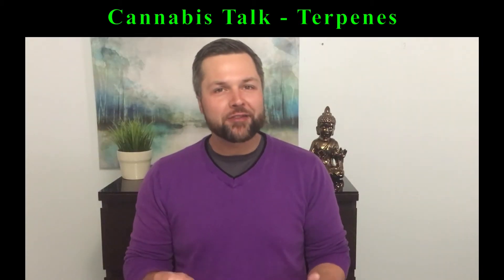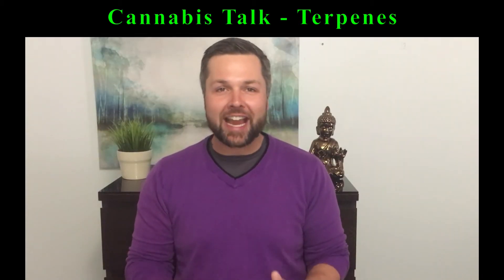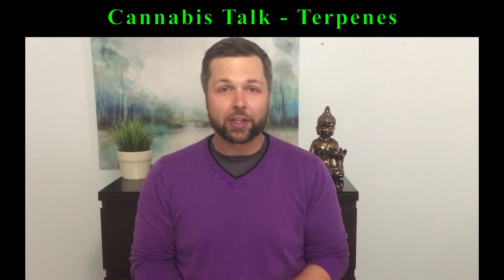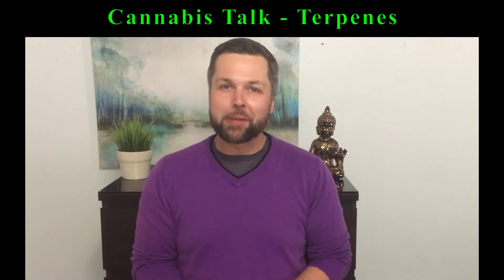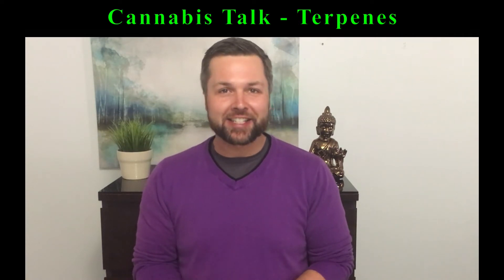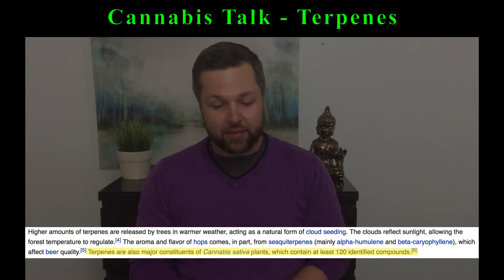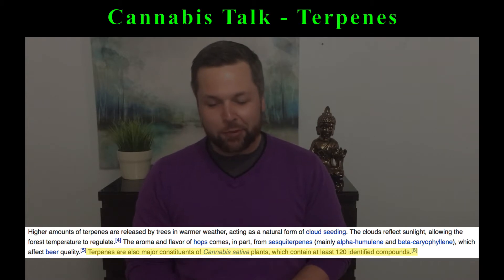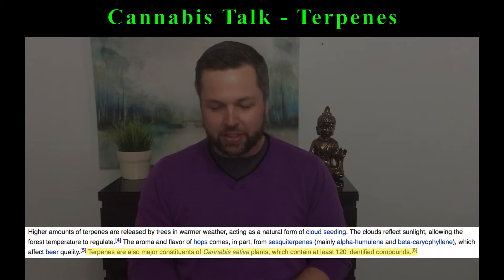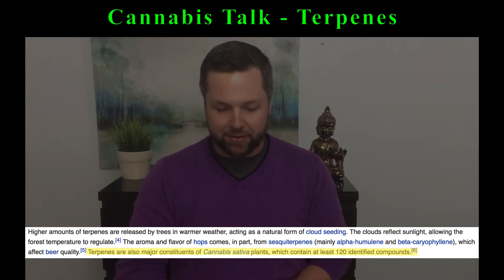There have been over 250 organic terpenes identified in the world. Wikipedia goes on to say terpenes are also major constituents of the cannabis sativa plant, which contain at least 120 identified compounds.